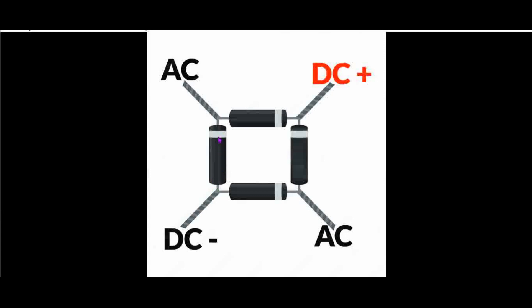Where a diode meets another — where the negative side of a diode (the cathode) meets the anode of another diode — that's where we connect our AC supply. Where the negative side of one diode meets the other negative side (cathode to cathode), that's where we'll have our DC positive output. And where the anode of one diode meets the anode of another diode, that's where we'll have our DC negative output.